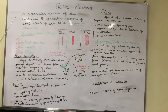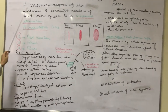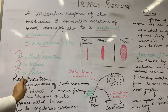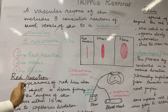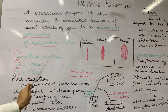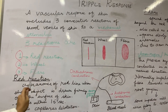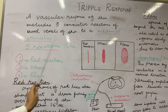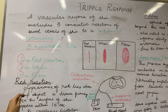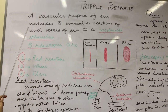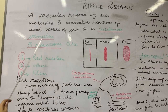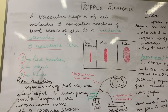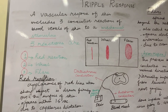What is the triple response? It is a vascular response of the skin that includes three consecutive reactions of the blood vessels to a mechanical stimulus. We will use any sharp object. The three reactions of the skin are red reaction, wheal, and flare.